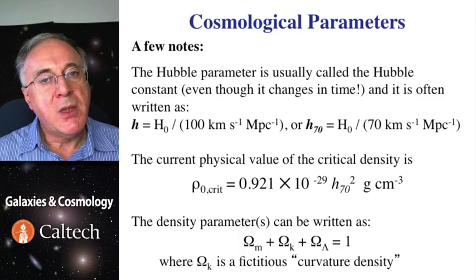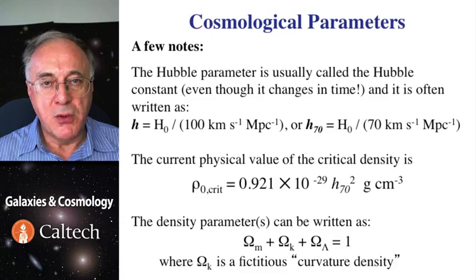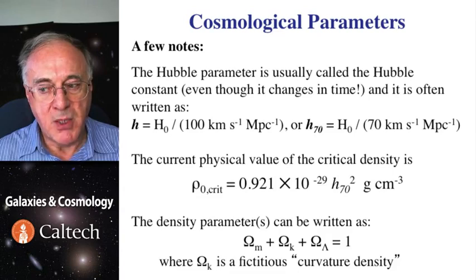So we can write density parameters in the following form, that omega of the matter, omega of the energy density or vacuum, plus omega curvature, all add up to one. Omega curvature really is defined simply as a deviation of the other two from unity. But it makes a more elegant formula in this way.